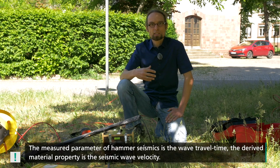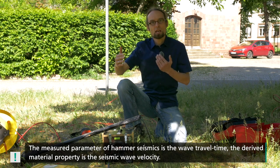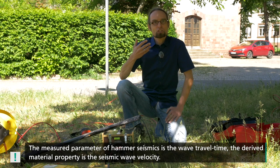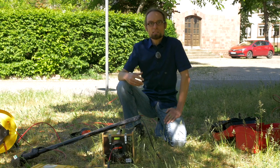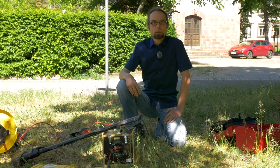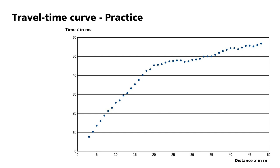The measurement parameters of the hammer seismics are therefore the travel time of the waves, and the derived subsurface or material properties are the seismic wave velocities. I shall show you, using a measurement from an earlier field test in the Hegau, how this can be determined from the travel time diagram. Here you can see the recorded travel time diagram. We can determine the wave velocity of the uppermost layer from the slope of the travel time branch of the direct wave: v1 equals 1 divided by the slope m1, equals delta t divided by delta x.